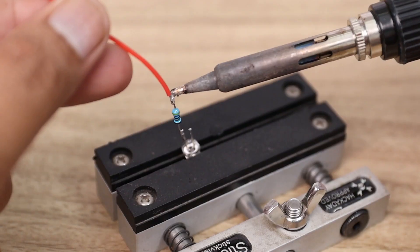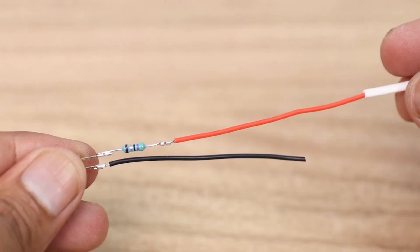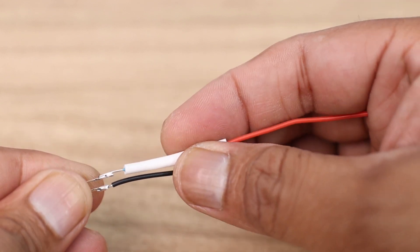Then solder a red wire to the resistor and a black wire to the negative terminal of the LED. To insulate the soldering joint, apply heat shrink tube.